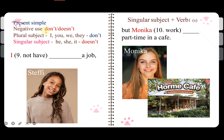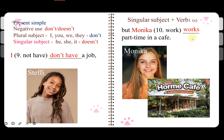For negatives, use 'don't' or 'doesn't.' For plural subjects — I, you, we, they — use 'don't.' For singular subjects — he, she, it — use 'doesn't.' So: I don't have a job. Monika is singular, so we add S: Monika works part time in a coffee shop.